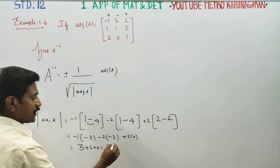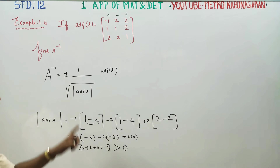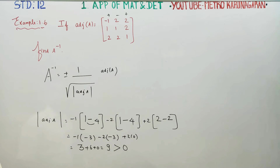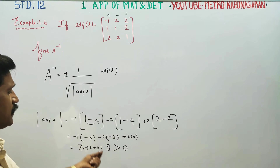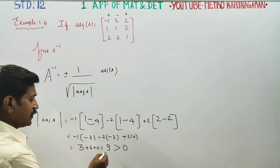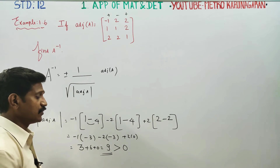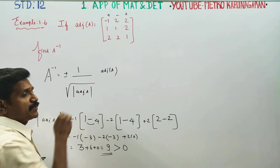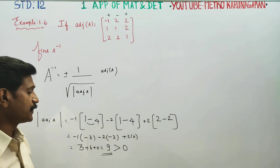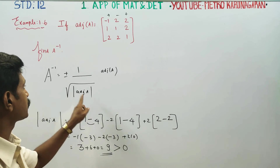Now, taking the square root of 9 — it is definitely a positive number, greater than 0. When square root problems come, you have to mind it: it is always greater than 0. If it were equal to 0, then 1 by 0 would be a problem. So it is greater than 0.